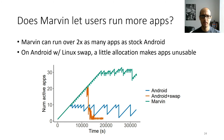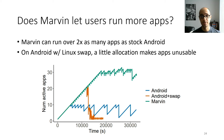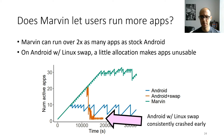We found that Marvin supports running over twice as many active apps as unmodified Android. On Android with a Linux swap file enabled, apps would technically stay alive but past a certain point they would all freeze up due to swap thrashing caused by their small allocation activity. Furthermore, Android with a Linux swap file consistently crashed early in our experiments due to general instability. So Marvin could run over twice as many active apps as both unmodified Android and Android with a Linux swap file.